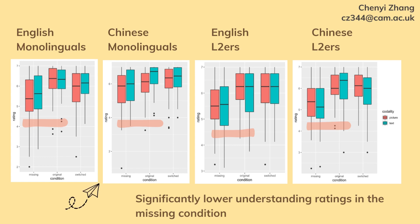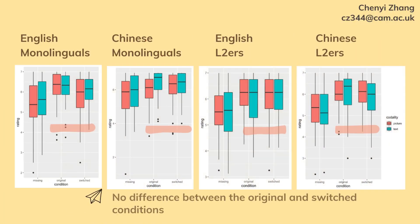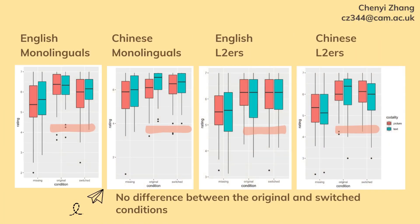The results are reported here, and the first thing we would want to discuss is the understanding rating. All four groups demonstrated the same performance: they rated the stories without the bridging event as significantly harder to understand, while the stories with the switched bridging event were as easily understandable as the original stories. This pattern applied to both stories with textual or pictorial backgrounds, implying that text-picture integration can be achieved during reading comprehension by all four groups, while bridging inference generation can be cognitively more demanding.